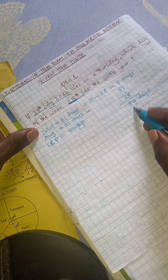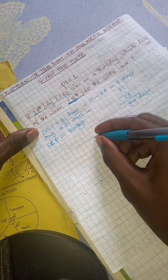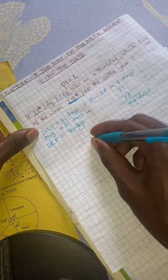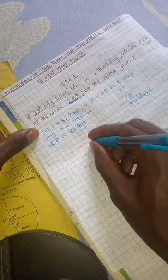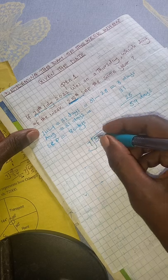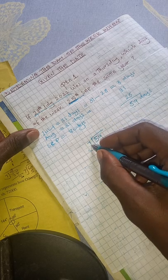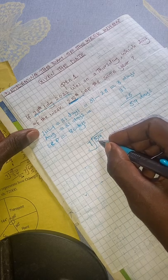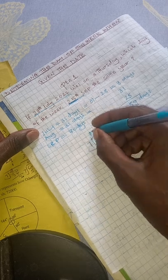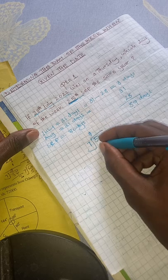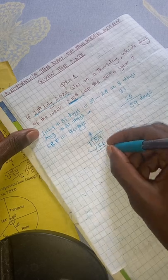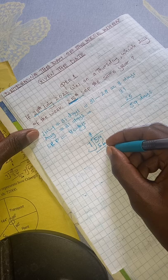After you get that sum, you come and divide it by 7 days of the week. So you ask yourself which number you multiply with 7 to get an answer close to 59. You get 8, because 8 times 7 gives you 56. Subtract, and the remainder is 3.